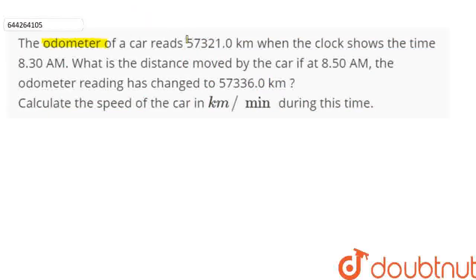The odometer of a car reads 57,321 km when the clock shows the time 8:30 AM. What is the distance moved by the car if at 8:50 AM the odometer reading has changed to 57,336 km? And calculate the speed of the car in km per minute during this time. So at 8:30 AM...